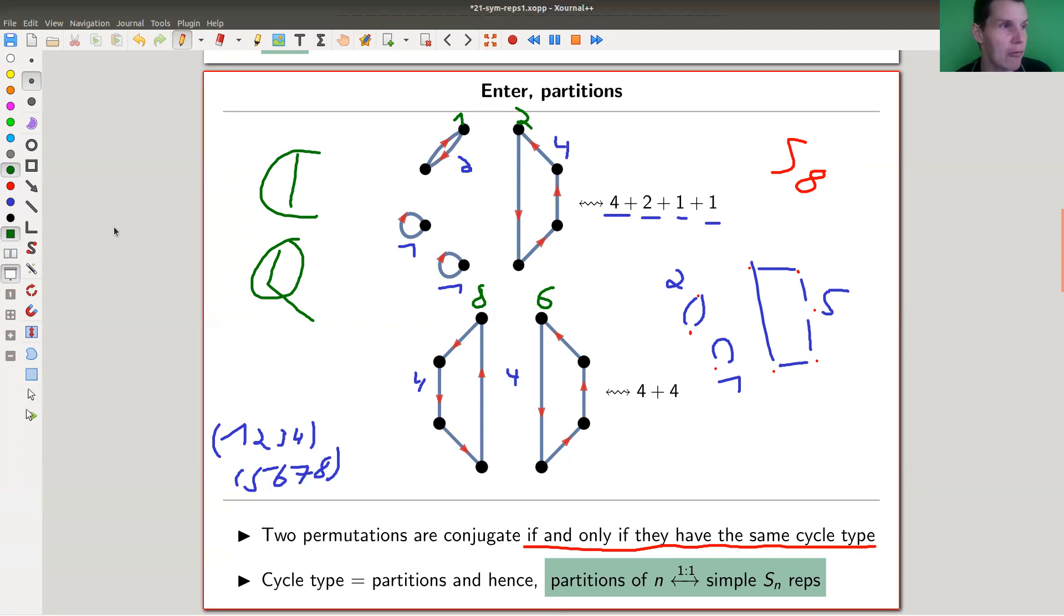And then I just count the numbers that I see. And the only thing that matters are the numbers and how often they appear. So four, two, one, one, for example, would be the same as two, one, one, four, and so on, because it's just, again, a relabeling operation.